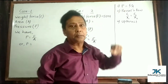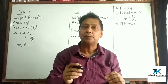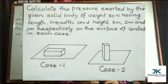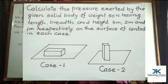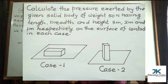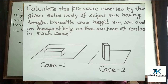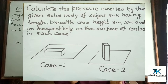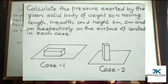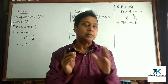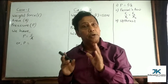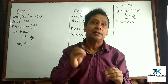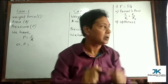Now I want to start with the first type: pressure equals force divided by area. Here is a numerical problem: calculate the pressure exerted by a solid body of weight 50 Newton, having length, breadth, and height of 3 meters, 2 meters, and 1 meter respectively on the surface of contact in each case. Two diagrams are given — case one and case two. This problem illustrates the use of P = F/A and also shows that pressure is inversely proportional to area.